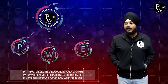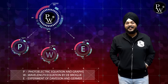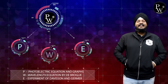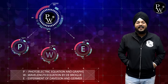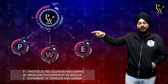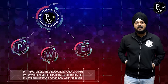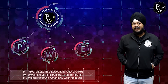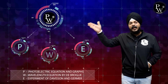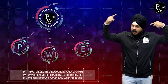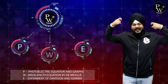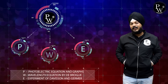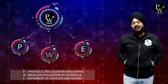E stands for the experiment conducted by Davisson and Germer. Instead of scrolling through the entire chapter, these three initials will help you a lot to memorize the entire chapter. You just have to remember PW English, and the entire chapter will scroll in your mind. That's the power of mnemonics.